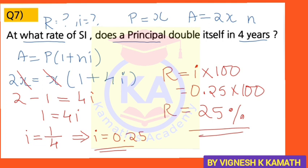This was a very easy problem. Note that you are taking the value of principal as X, and doubling itself in 4 years means after 4 years you get 2 times the principal deposited. So A = 2X, N = 4, and you need to find I which is the rate. So the rate is 25% and this question is clear.